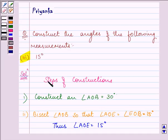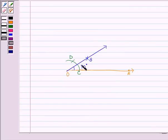I have already written down the steps of constructions. The first step is to construct an angle AOB equal to 30 degrees as you did in the first part of this third question like this. So this was a 30-degree angle that we made in the first part.